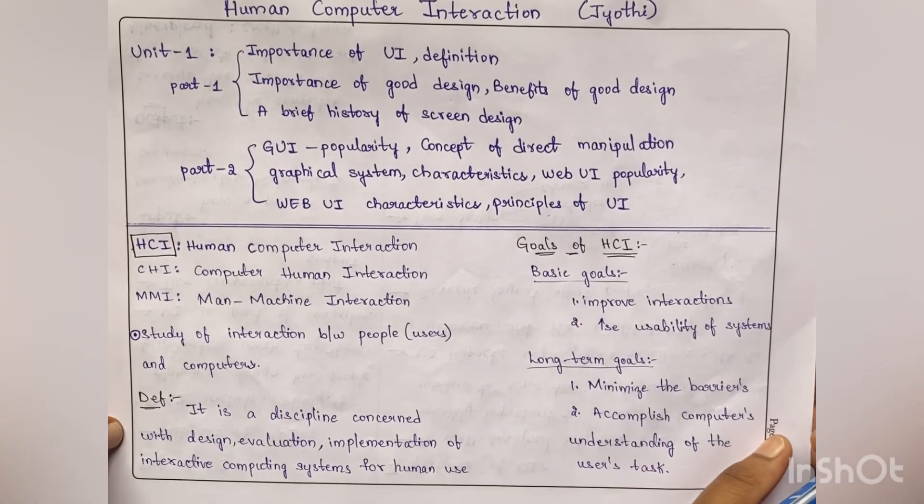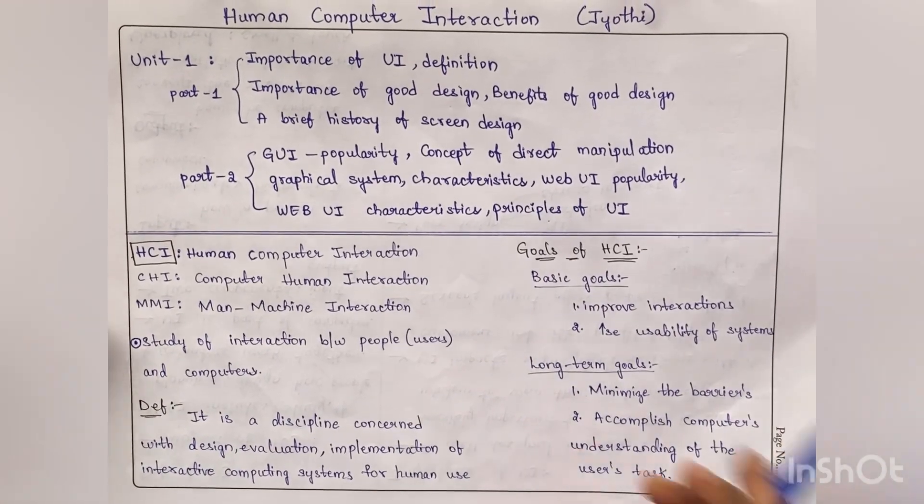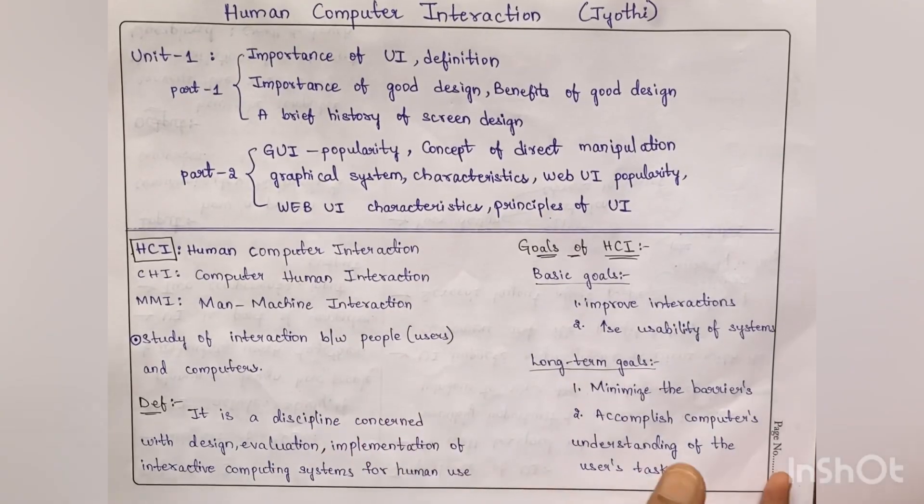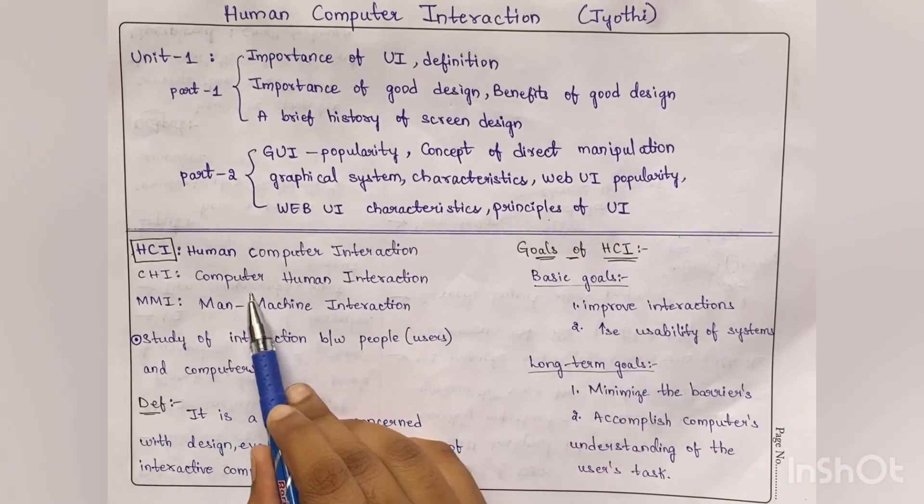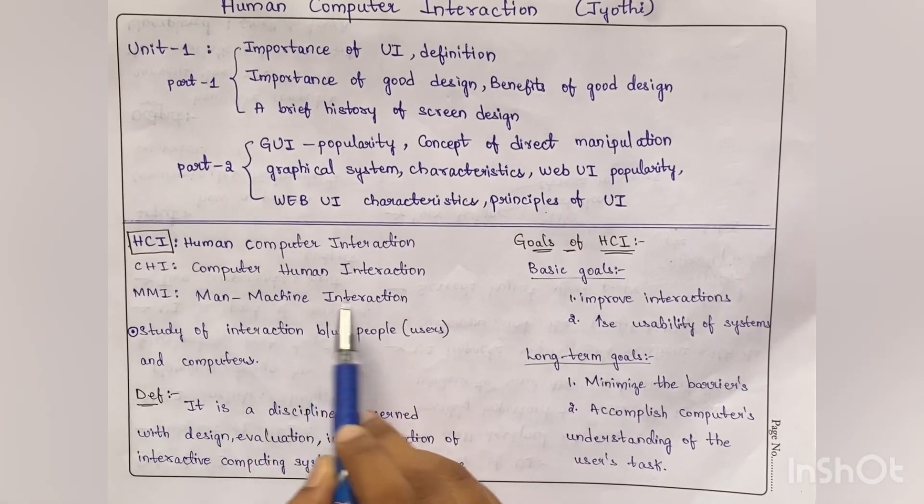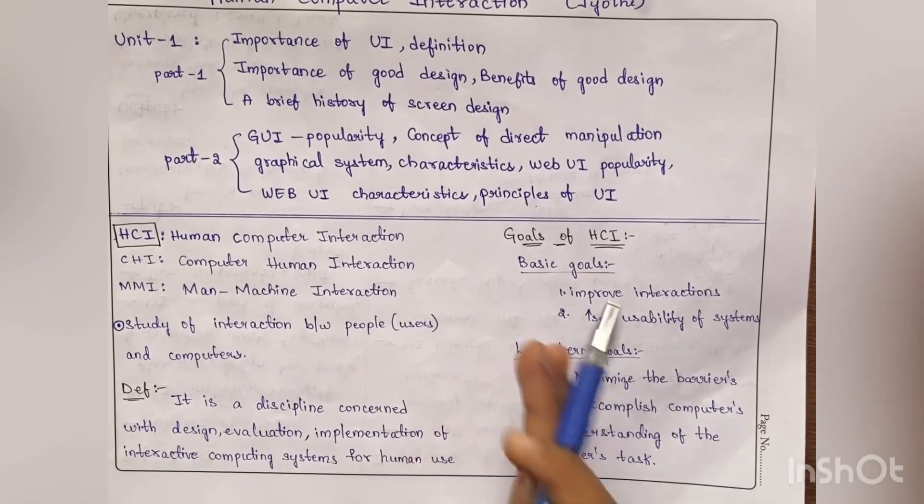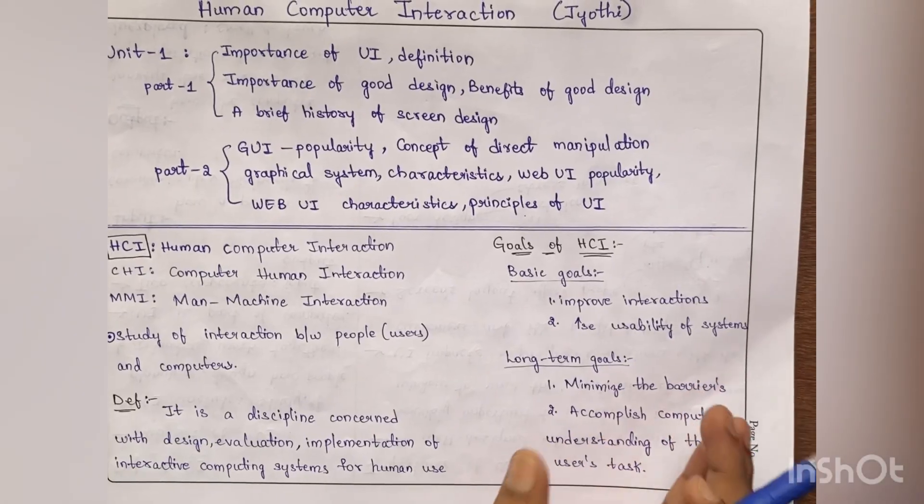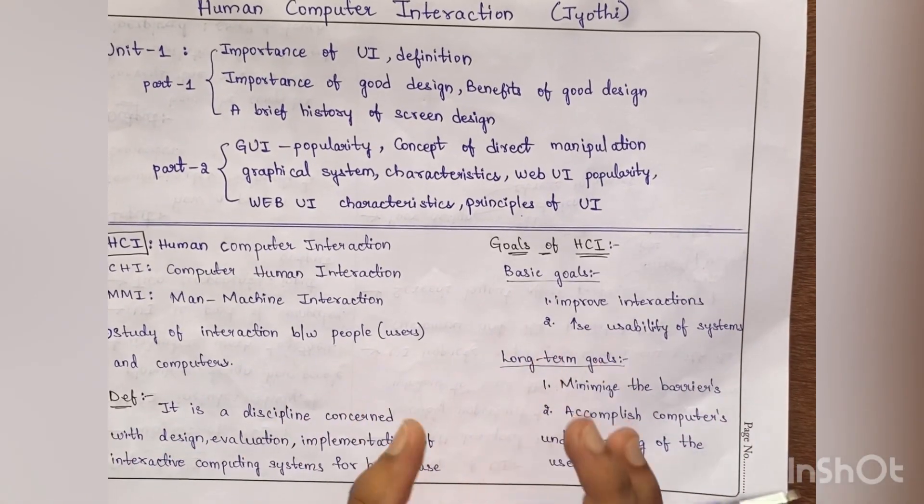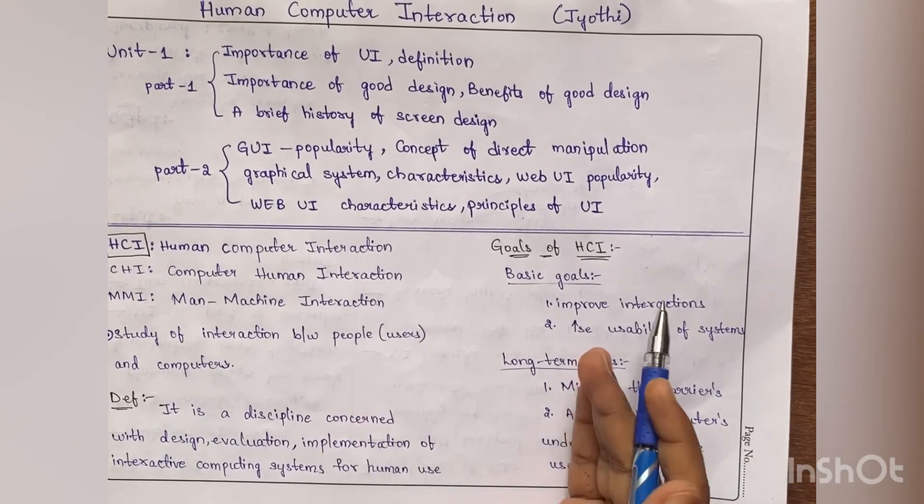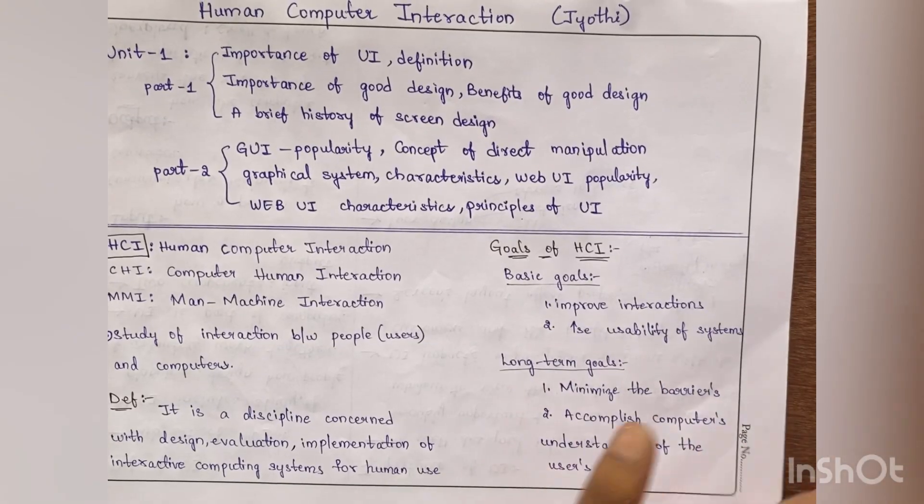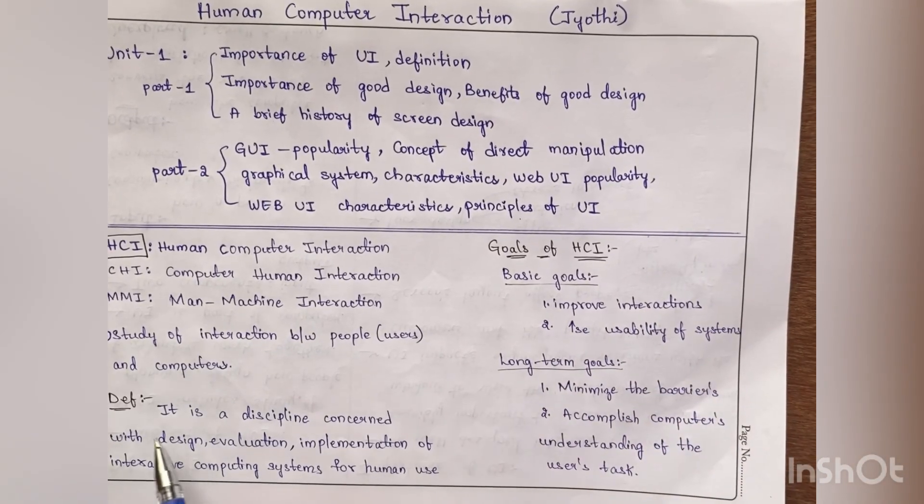So let's start with what is HCI. HCI is human computer interaction. It is also known as computer-human interaction or man-machine interaction. It is the study of interaction between people and the users. This HCI completely explains how people are interacting with the computers, the computing systems.